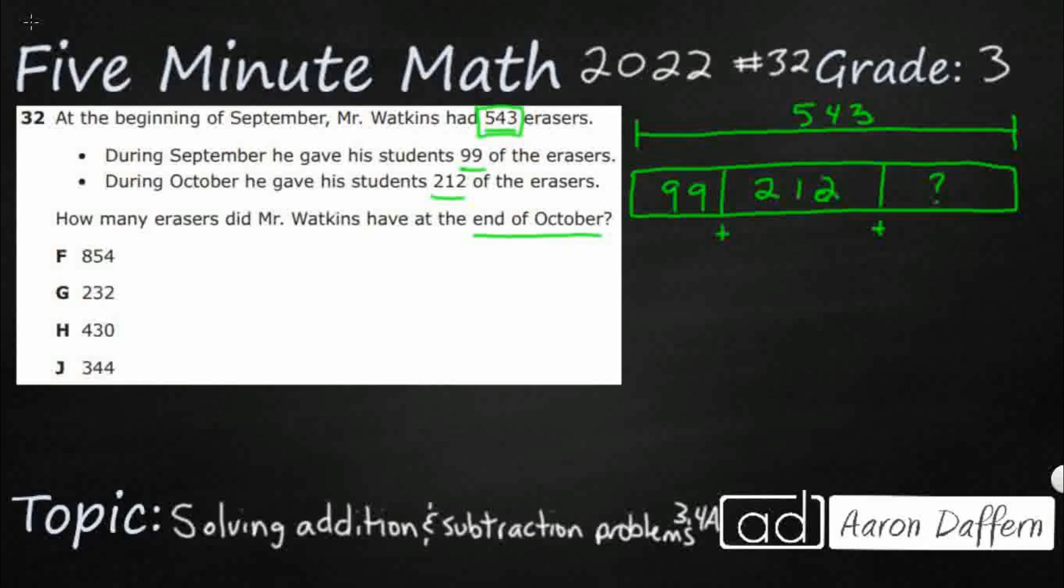So let's see how we can solve this. When I'm looking at this part, part, whole, right, I'm thinking of this addition. I'm wondering, I wonder how much he gave away. He gave away 99 and 212, right? So there's a few different ways we can do this.